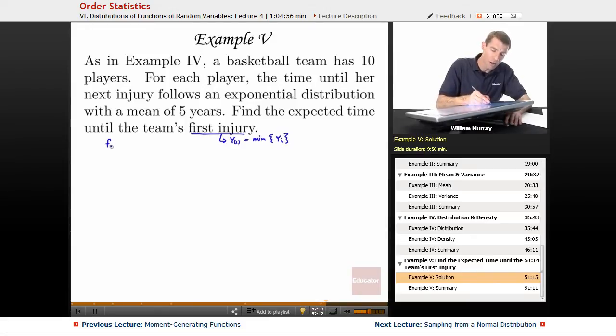We figured out in Example 4 the density function for f of y sub 1, which I'll remind you was 2e to the negative 2y. Now that's the density function for y sub 1, and that came from quite a bit of work in Example 4.